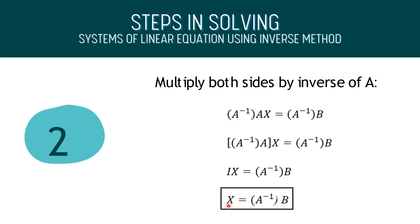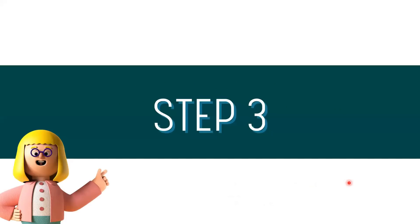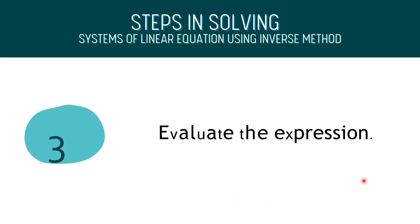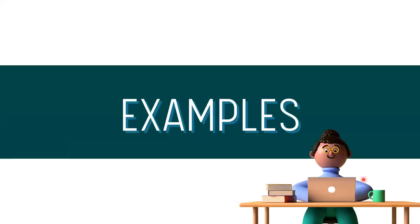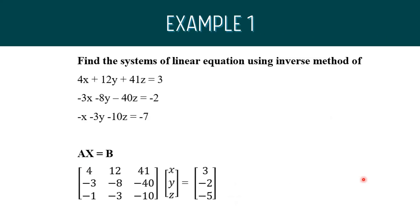From this we obtain the values of the unknowns needed. Step 3 is to evaluate the expression. For Example 1, find the solution to the system of linear equations using the inverse method: 4x plus 12y plus 41z equals 3, negative 3x minus 8y minus 40z equals negative 2, and negative x minus 3y minus 10z equals negative 7. The first step is to recall our form AX equals B, where A is the coefficient matrix.